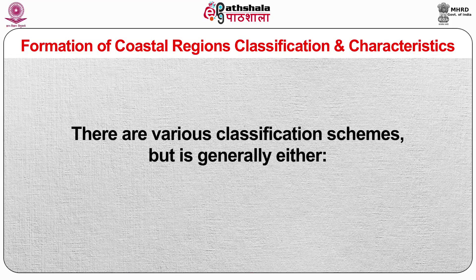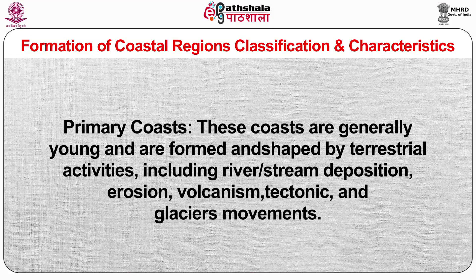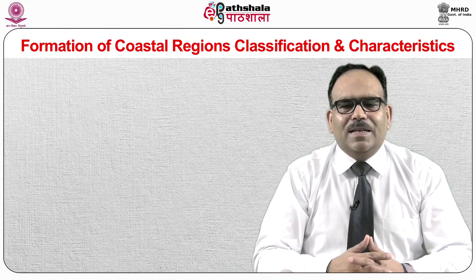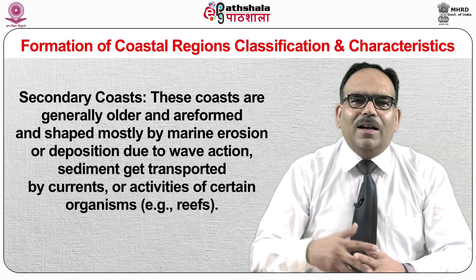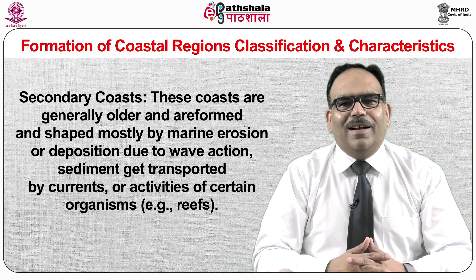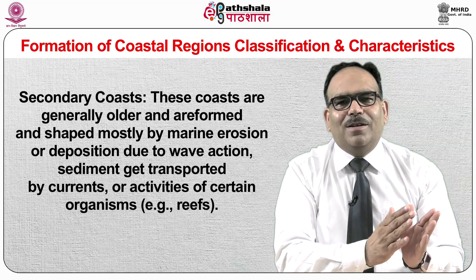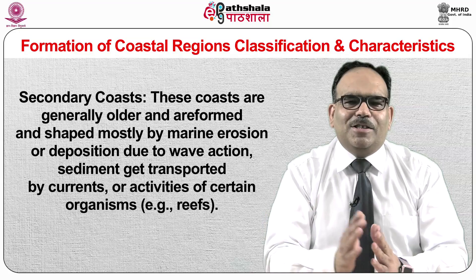There are various classification schemes, but coasts are generally either primary or secondary. Primary coasts are generally young and are formed and shaped by terrestrial activities including river and stream deposition, erosion, volcanism, tectonic and glacier movements. Secondary coasts are generally older and are formed and shaped mostly by marine erosion or deposition due to wave action, or sediment transported by currents or activities of certain organisms.